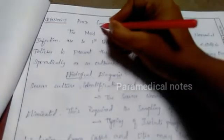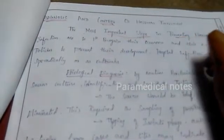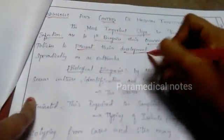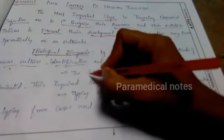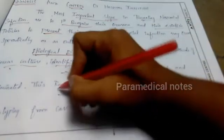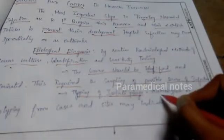The sixth point is diagnosis and control of hospital infection. Prevention is the most important step. We have to recognize hospital policies and prevent hospital infection. For diagnosis, first we do culture, identification, and sensitivity testing on specimens. Second, the source should be identified and eliminated, and required samples collected if possible.